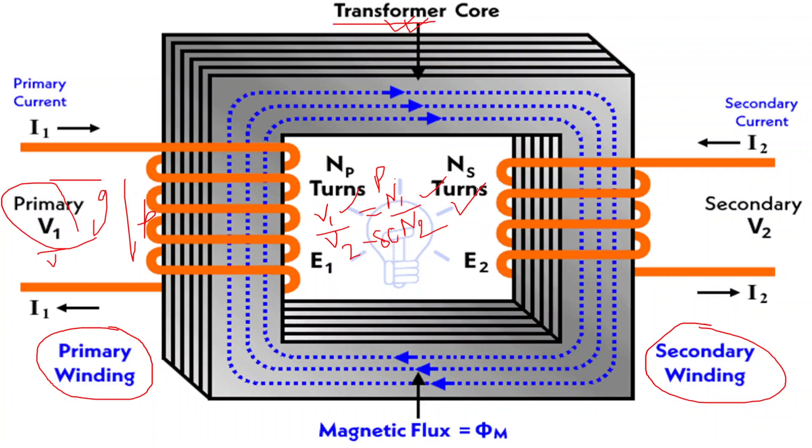What are the types of transformers? First one is the step-up transformer. Step-up transformer increases the voltage from the primary to the secondary coil. This is useful for long-distance power transmission where high voltages are more efficient for reducing energy losses.